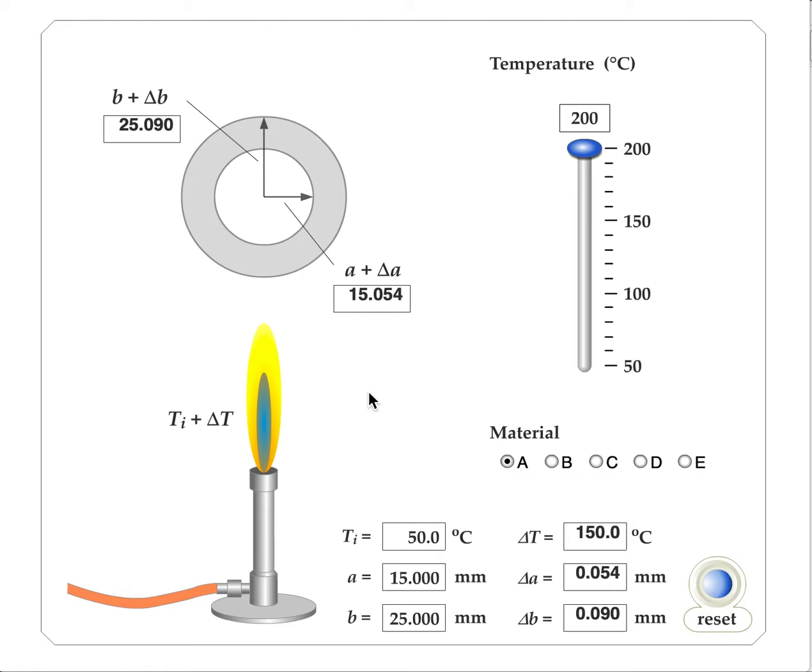In this example, we're going to consider what happens when we change the material. When we had the material set at A, we saw that the change in the inner radius was 0.054 millimeters, and the change in the outer radius was 0.9 millimeters.